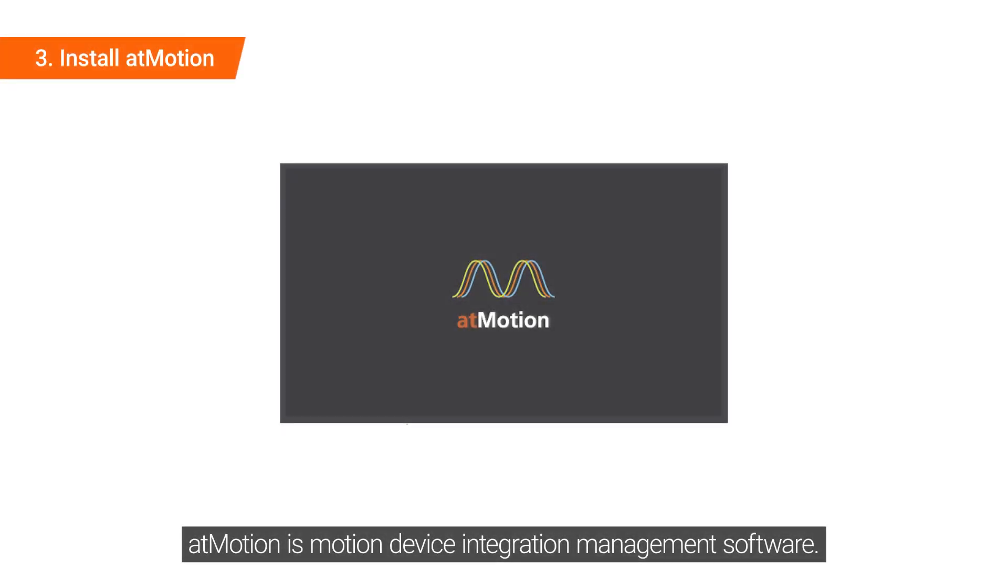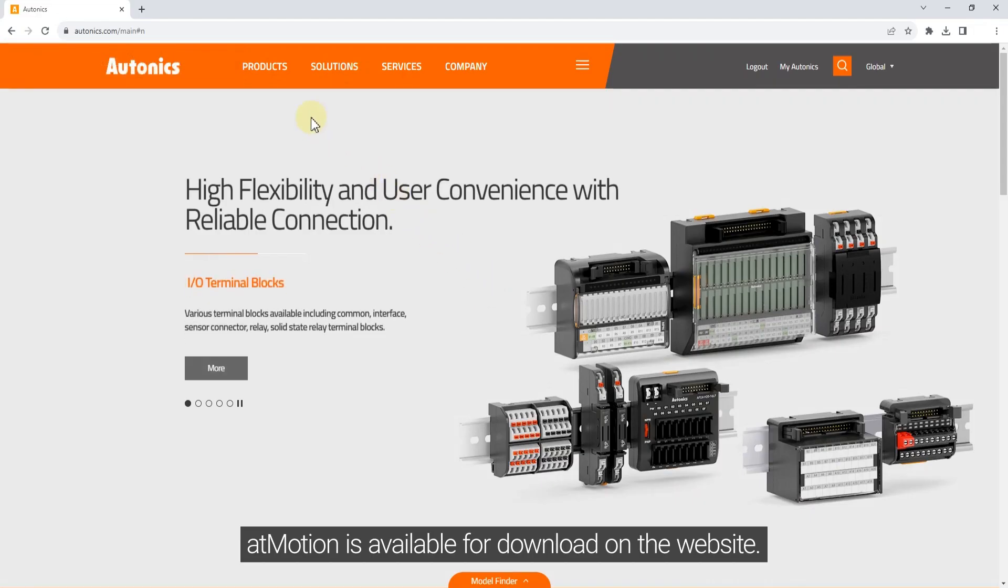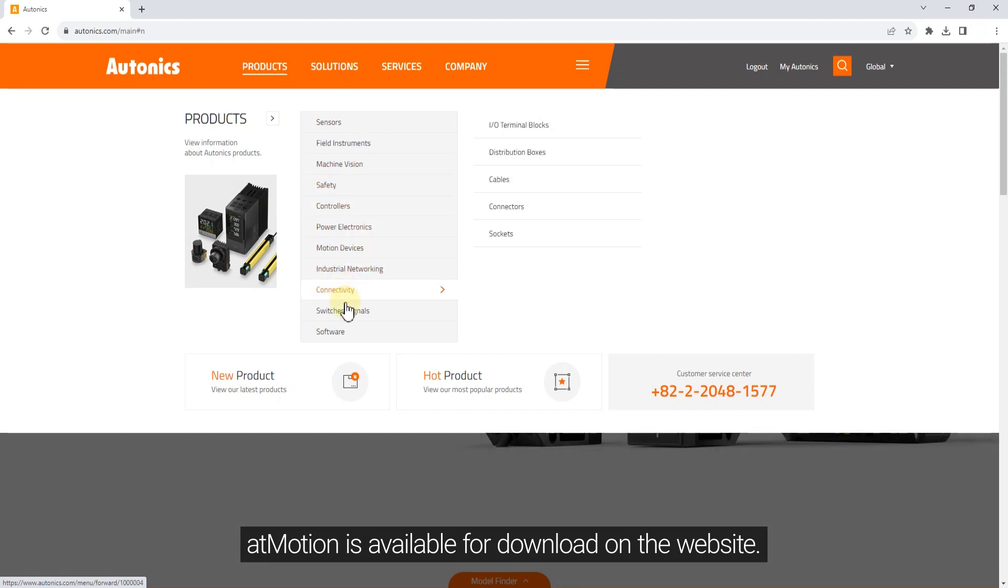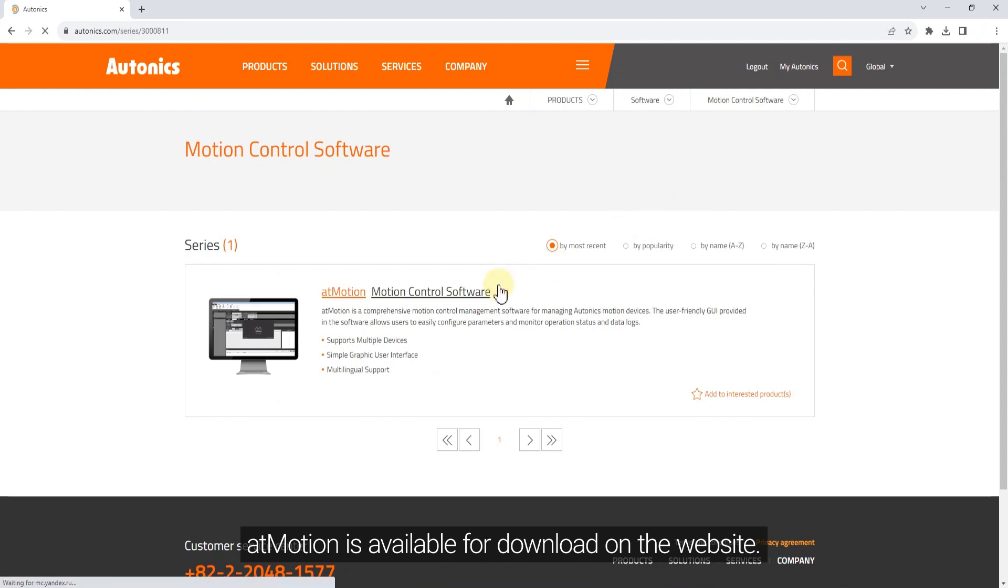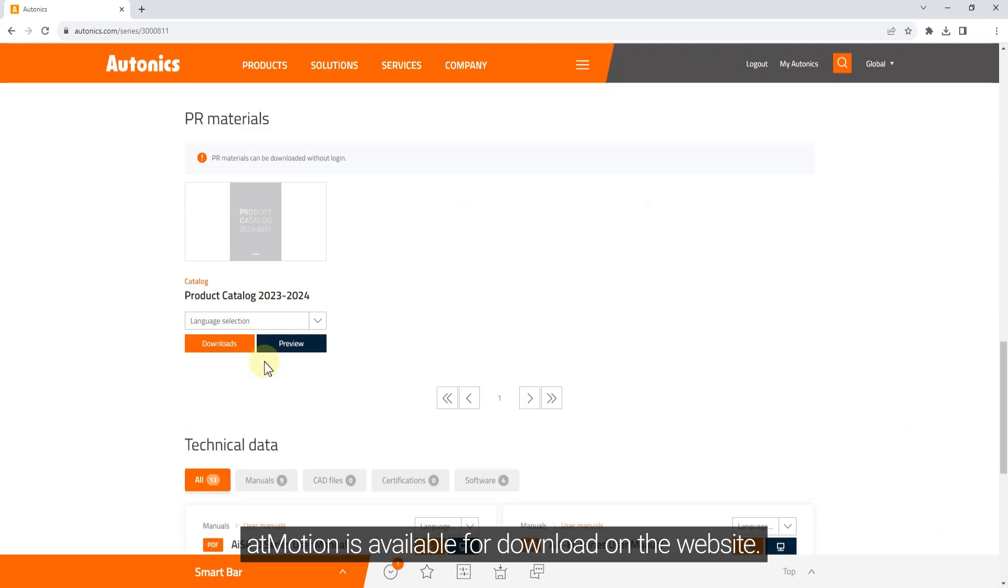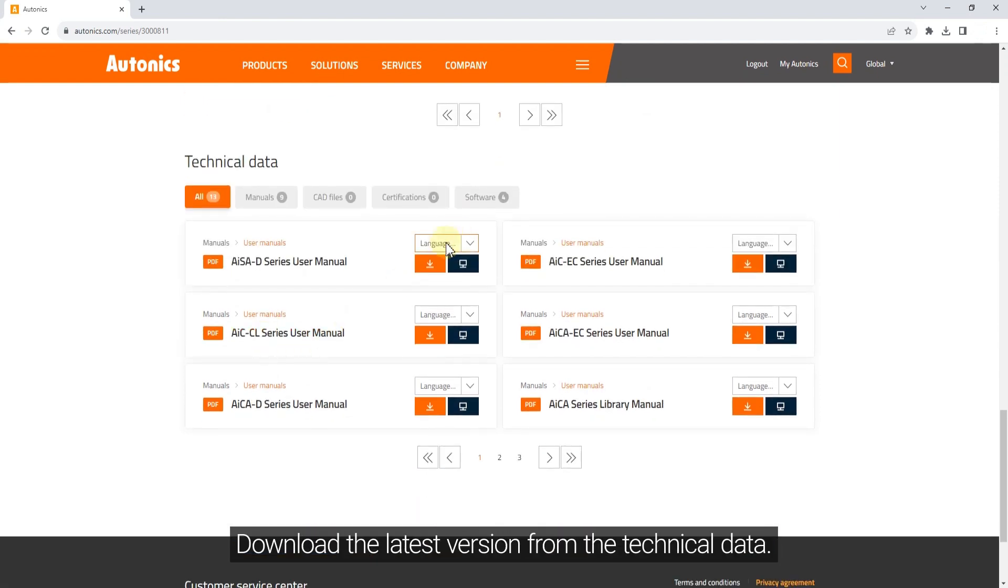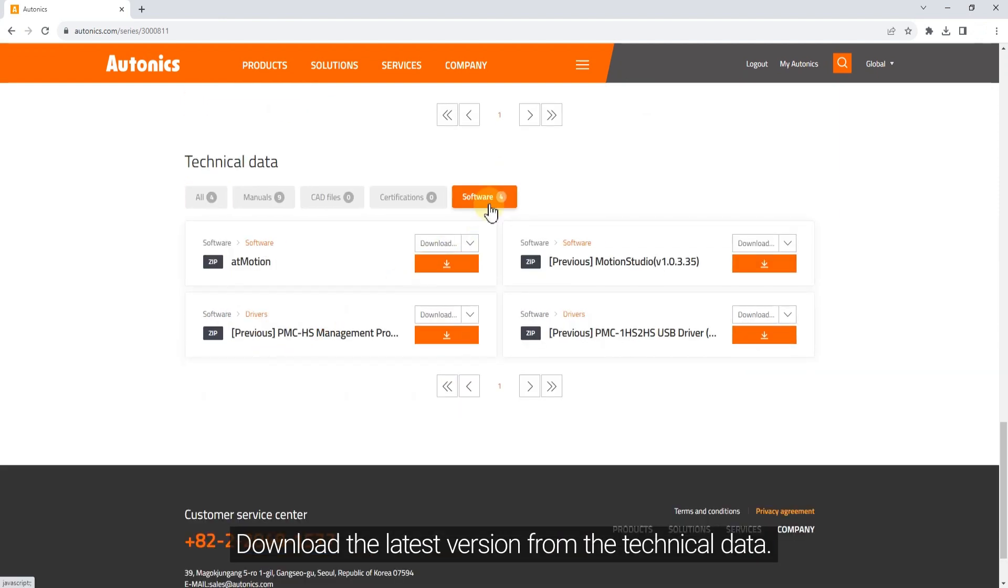AT Motion is motion device integration management software. AT Motion is available for download on the website. Download the latest version from the technical data.